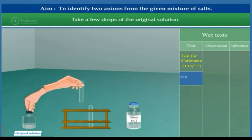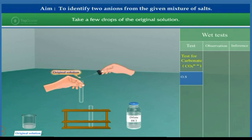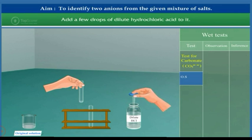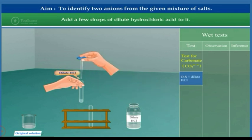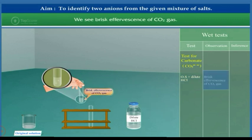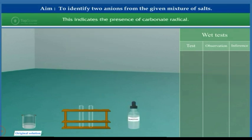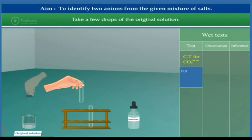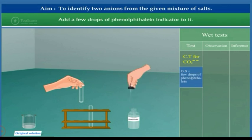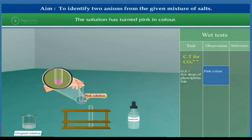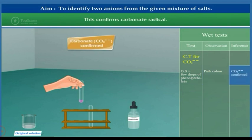Test for carbonate: Take a few drops of the original solution. Add a few drops of dilute hydrochloric acid to it. Brisk effervescence of carbon dioxide gas indicates the presence of carbonate radical. Confirmatory test for carbonate: Take a few drops of the original solution. Add a few drops of phenolphthalein indicator. The solution turns pink in colour, confirming carbonate radical.